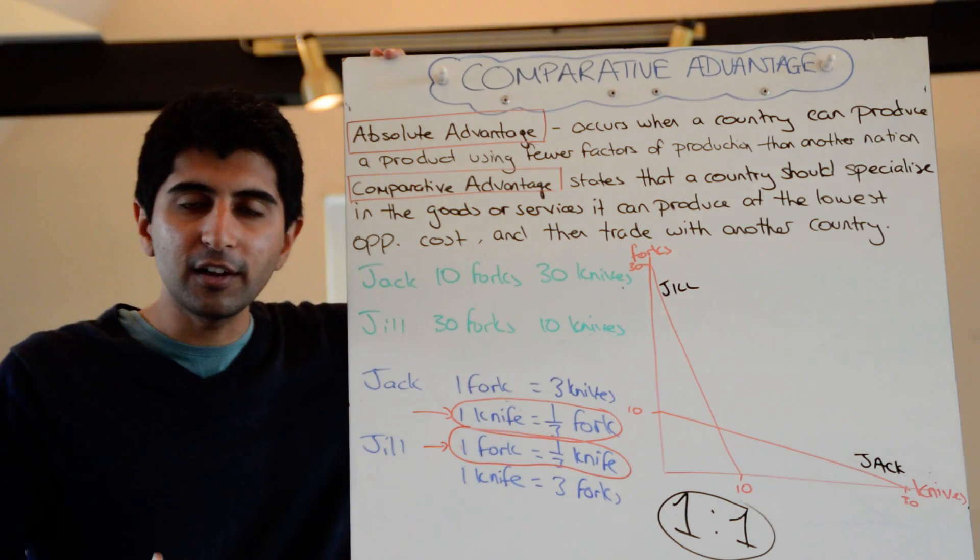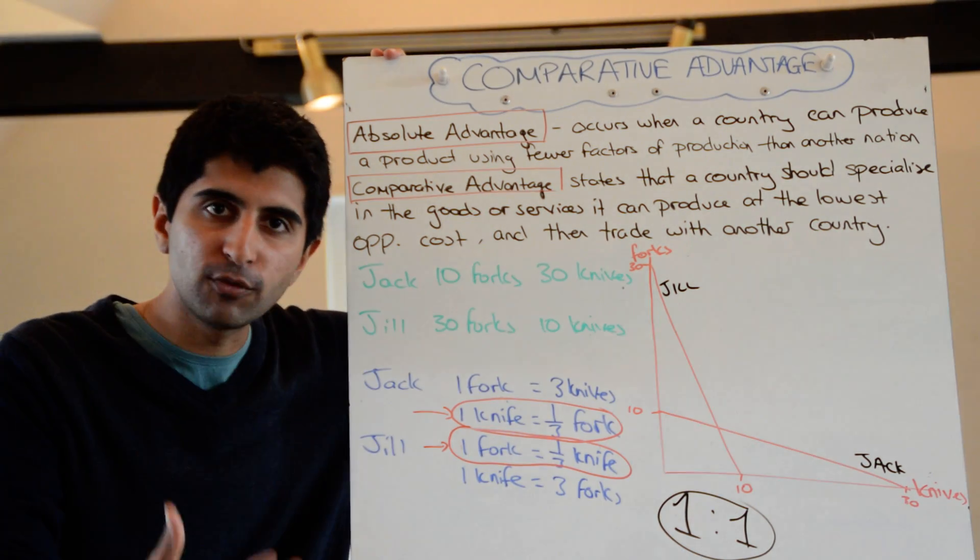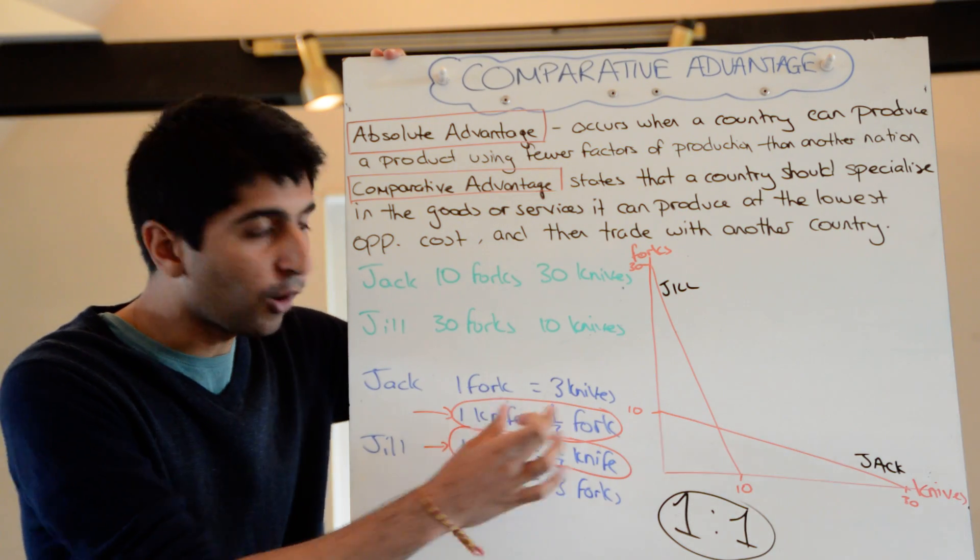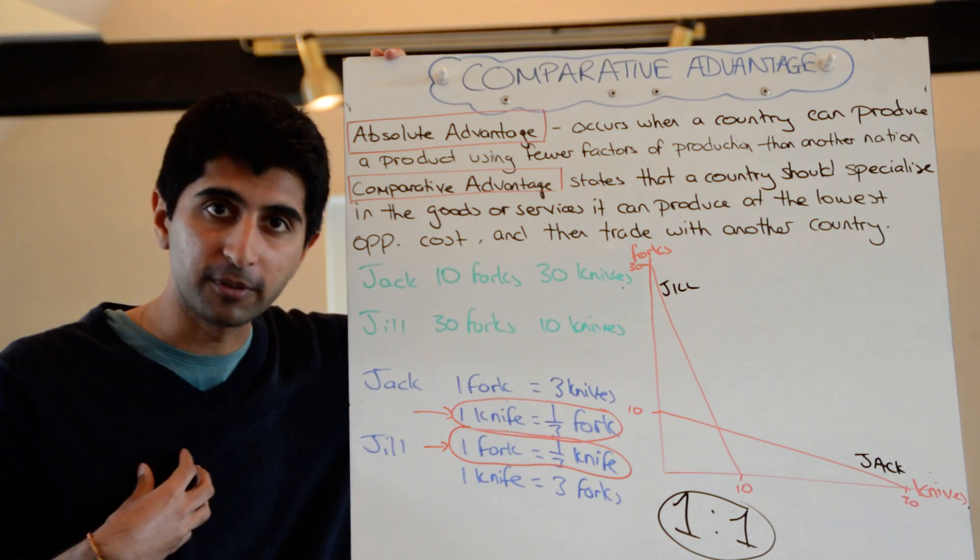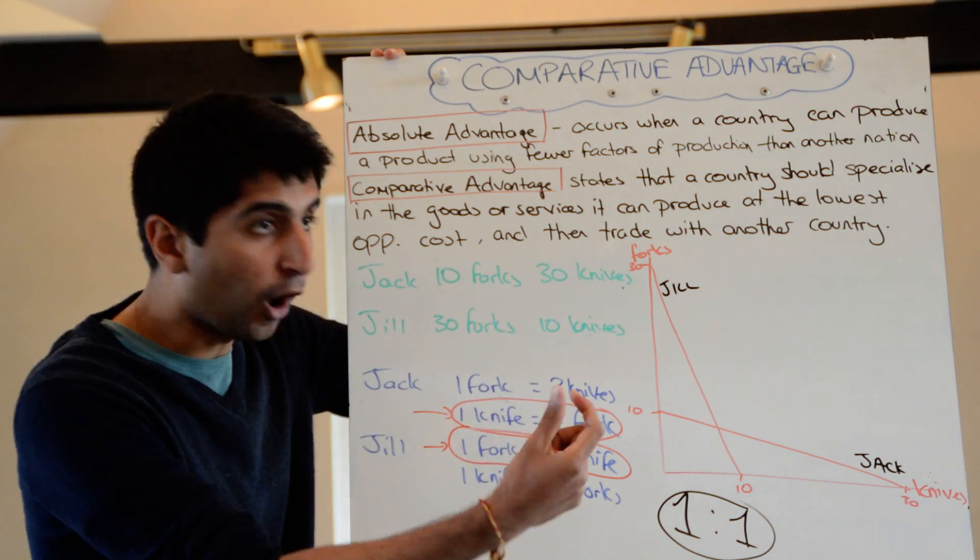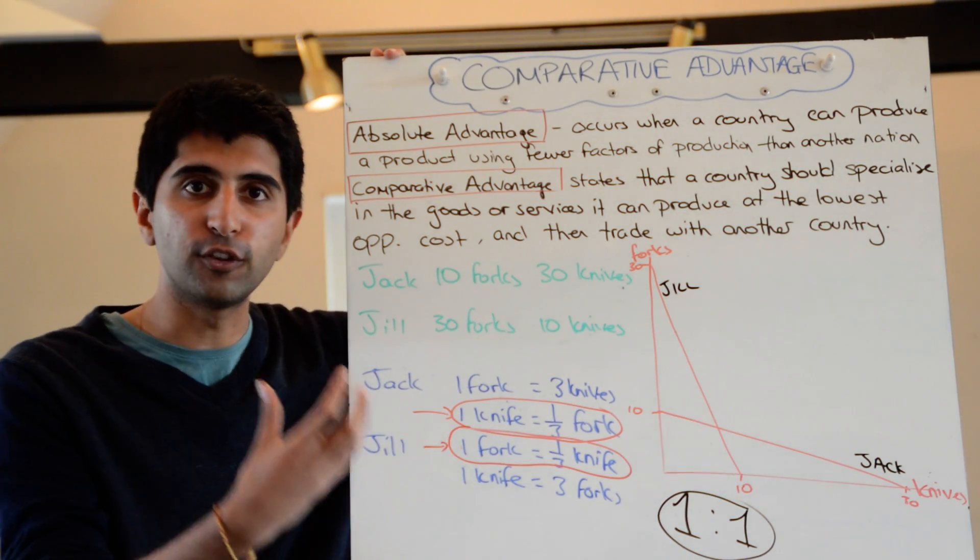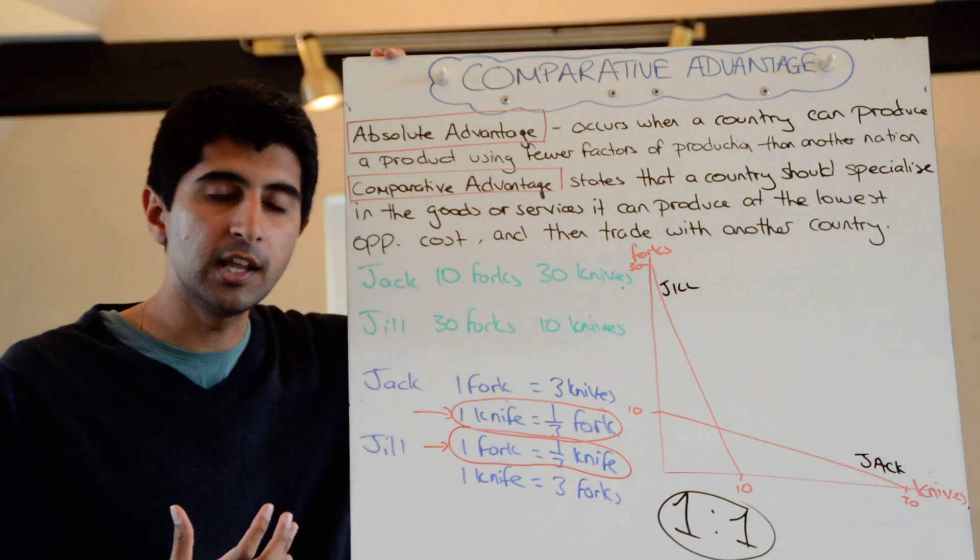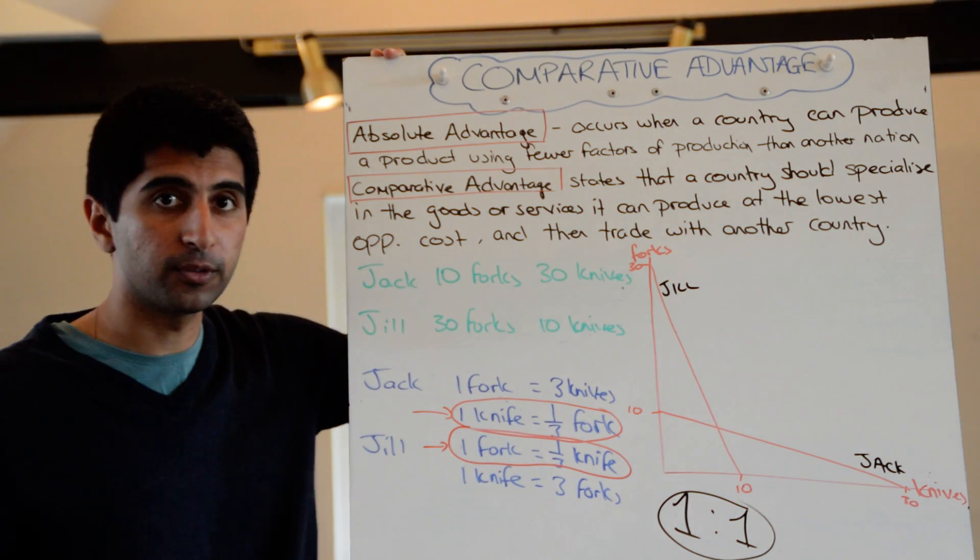And also, for him to specialize in producing knives, what would he get back in return? Well, he could have got a third of a fork if he produced it himself, whereas now, by selling a knife he can get in a whole fork instead. So selling knives is worthwhile, he gets more back in return than what he could have got if he produced forks himself.